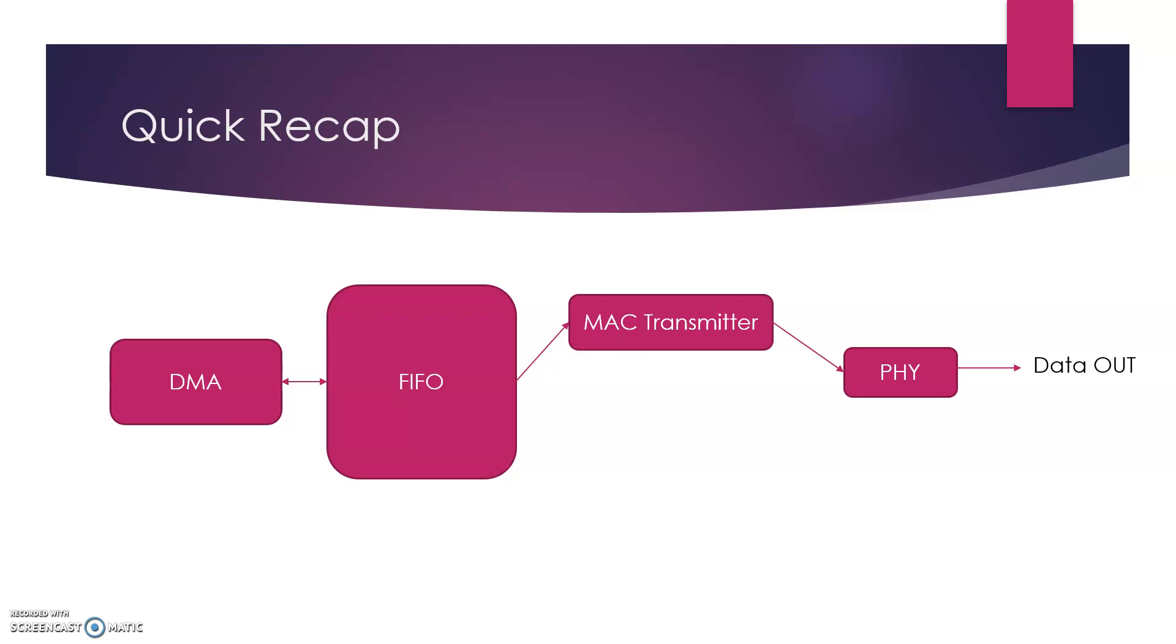So that's how the data is transmitted. Similarly, the PHY layer receives the data, which is then passed on to the MAC receiver, which then sends it out to a FIFO and ultimately the DMA receives it and stores the data in a particular memory location.